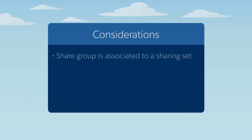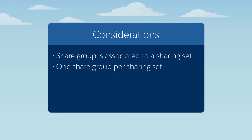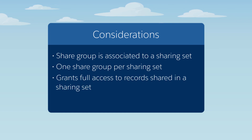A Share Group is associated to a Sharing Set, and you can only have one Share Group per Sharing Set. A Share Group grants full read-write-edit access to records owned by users in Sharing Sets.